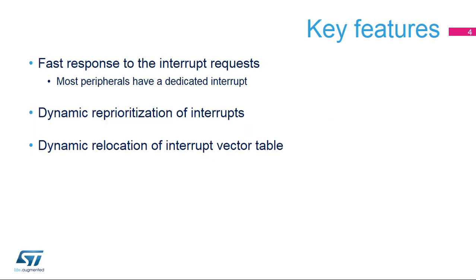The NVIC provides a fast response to interrupt requests, allowing an application to quickly serve incoming events. Most of the peripherals have a unique interrupt vector, making development of the application easier, with less need to programmatically determine the source of an interrupt during processing.